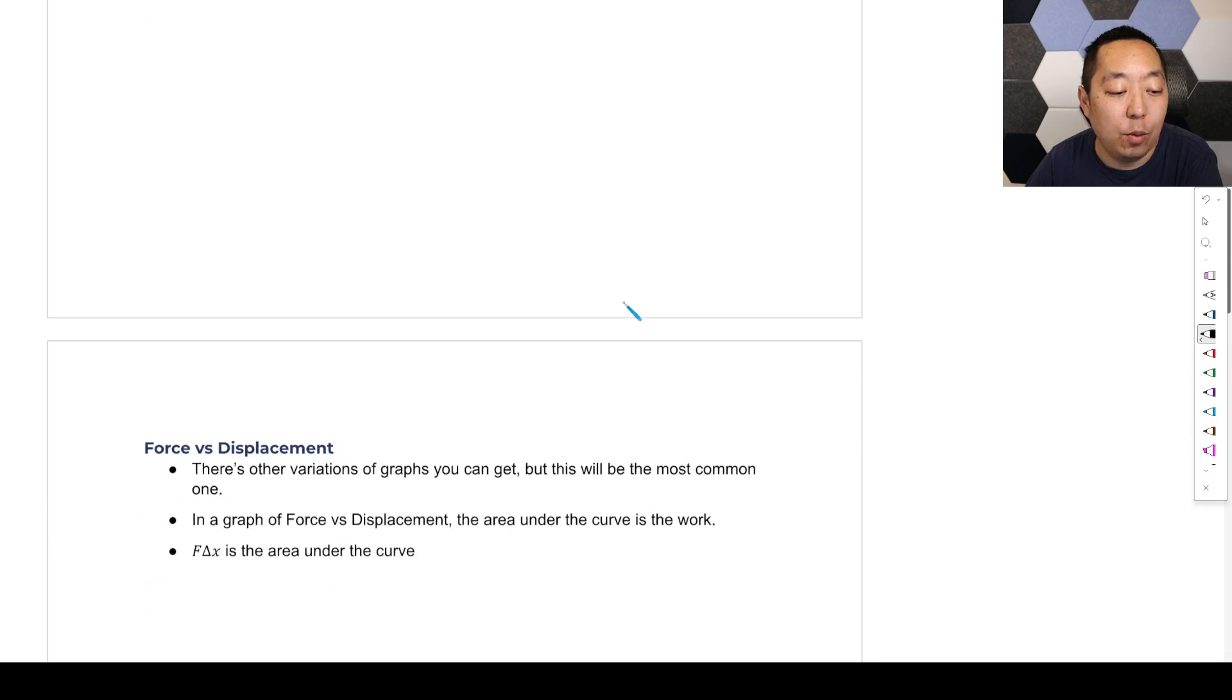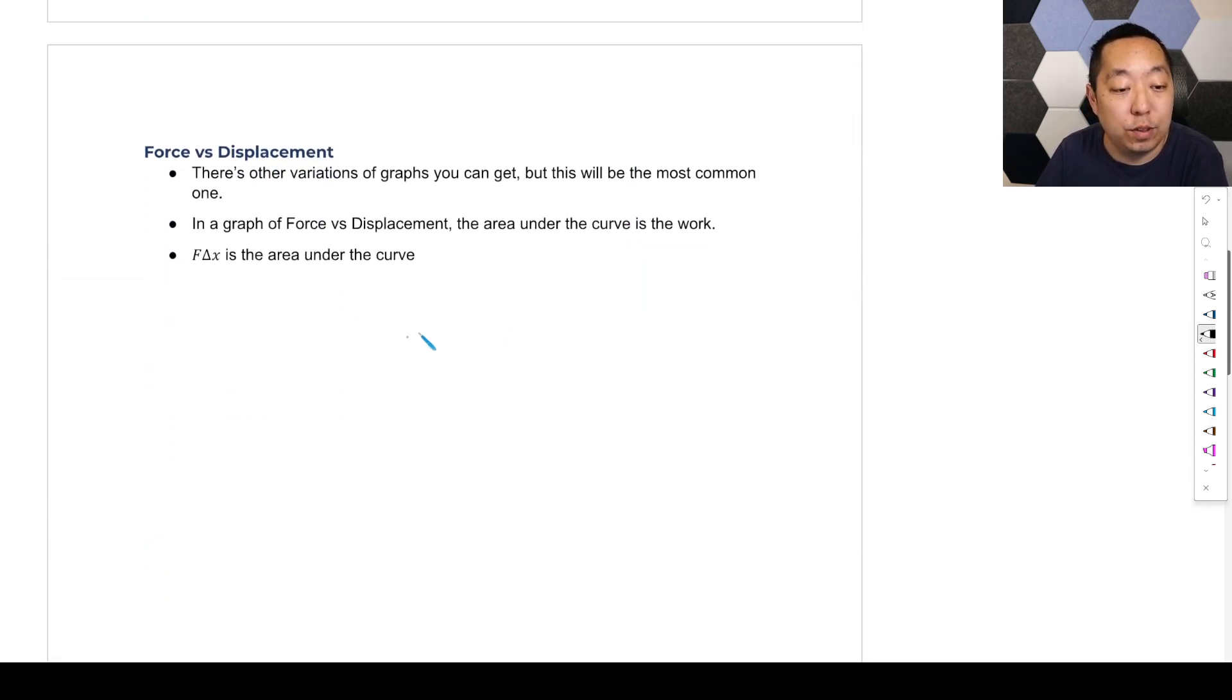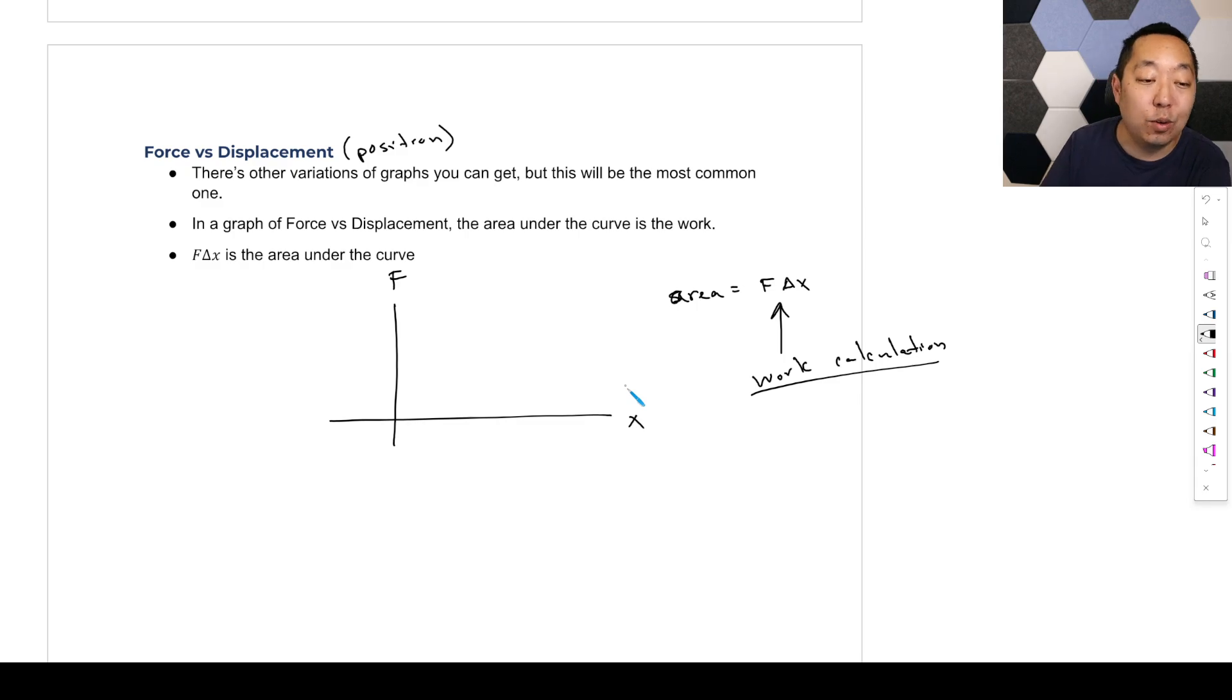Let's look at what happens when you have a force versus displacement graph, force versus position graph or something like that. Force versus displacement could be position here, it doesn't really matter. If you think about the area here, the area would be the y variable times the change of the x variable. You should recognize that that is our work calculation. So if we ever see a force versus position graph, the area under the curve is going to be the work.